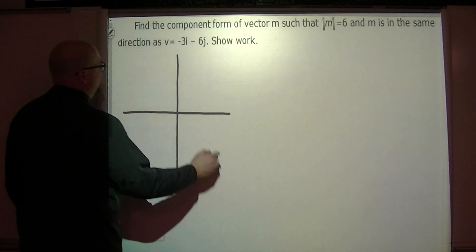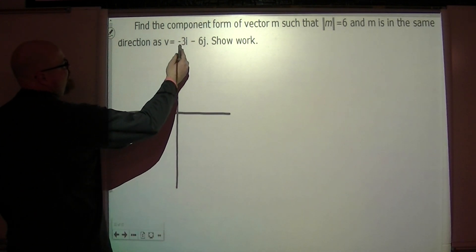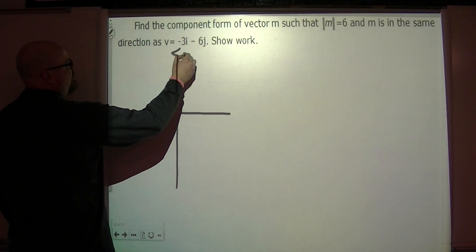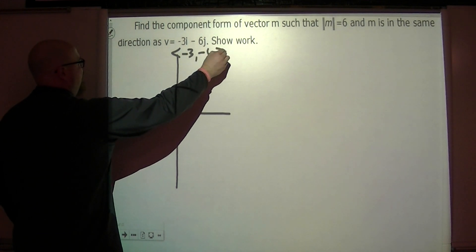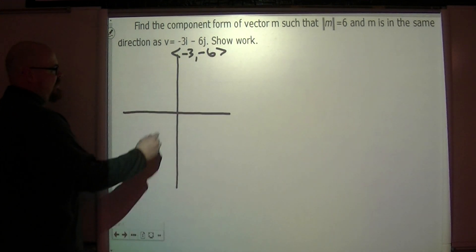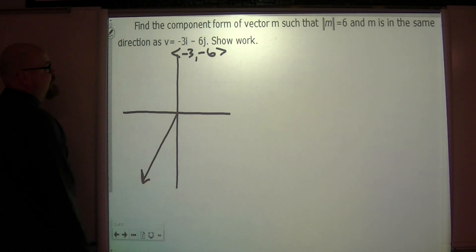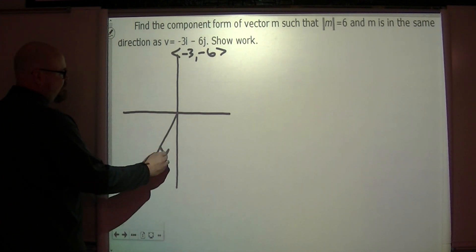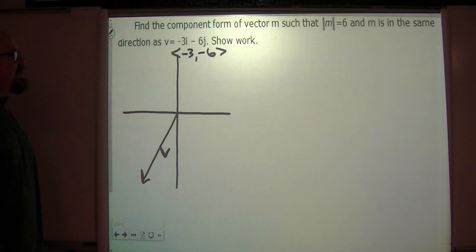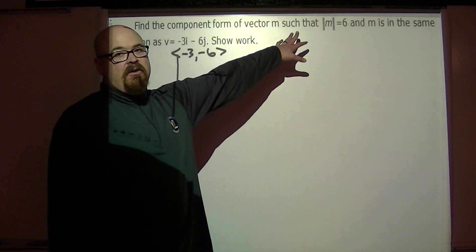So what we have is vector v has this linear combination which means its components are negative 3 and negative 6. So negative 3, negative 6, we'll just come down here. Right here's vector v.